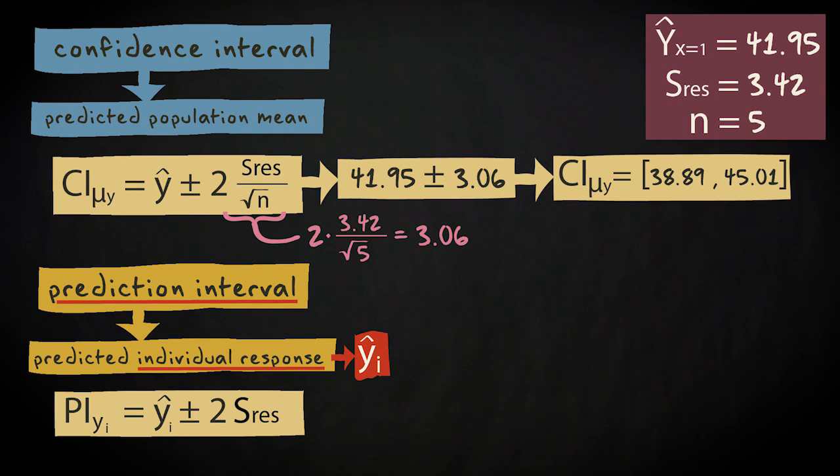Again, the approximation of the formula is the predicted value obtained from our sample for a one year old cat plus and minus the margin of error. Notice that I've added sub i to the predicted value to indicate we're talking about the predicted response for an individual case here.